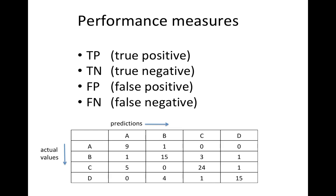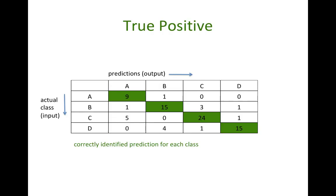To understand the performance measures, we need to understand these concepts first: true positive, true negative, false positive, and false negative. True positive is correctly identified prediction for each class. In the confusion matrix, you can see the green color cells in this table — they are the true positive.